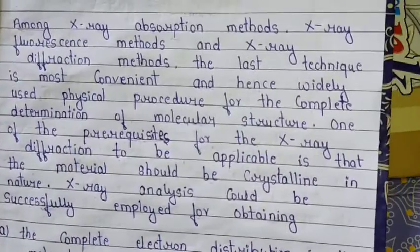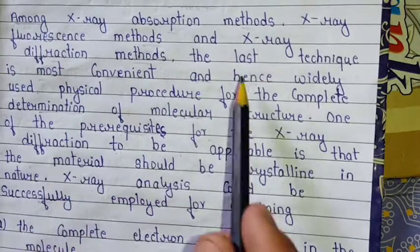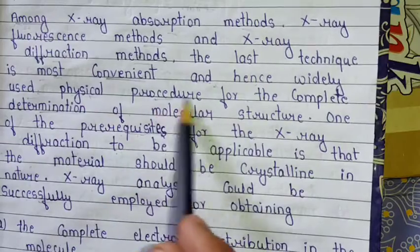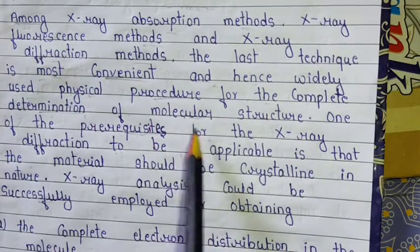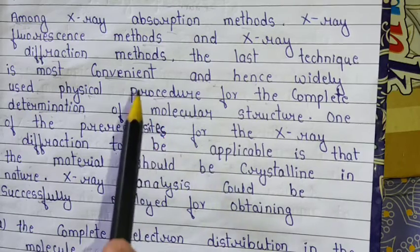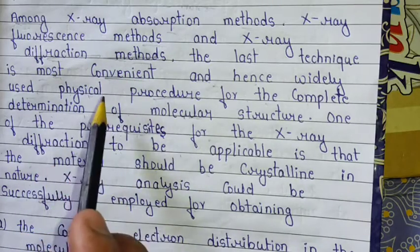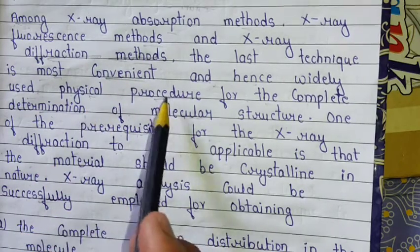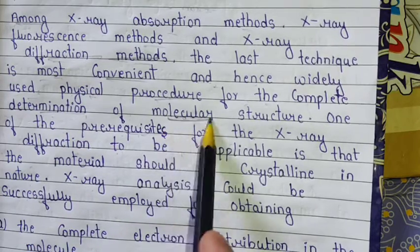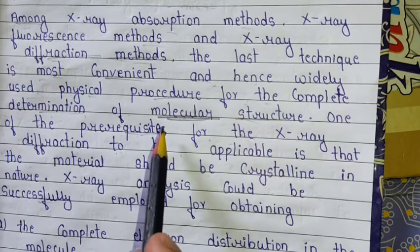Among the X-ray absorption method, X-ray fluorescence method, and X-ray diffraction method, the last technique is the most convenient and hence the most widely used physical procedure for the complete determination of molecular structure. All three are very important, but the diffraction method is the most important because it is the most widely used physical procedure for the complete determination of molecular structure.